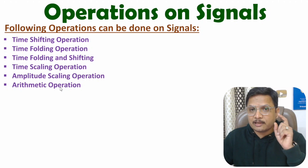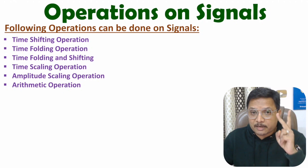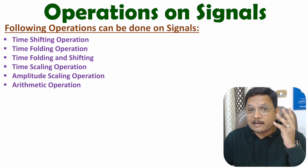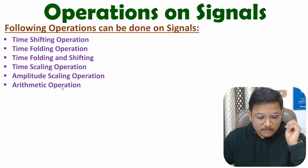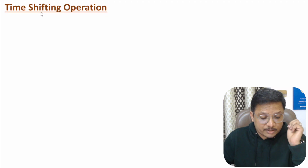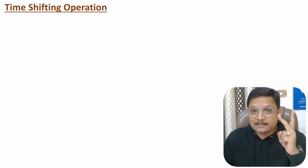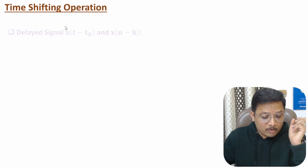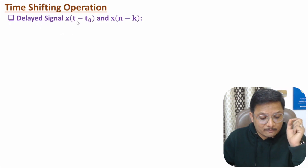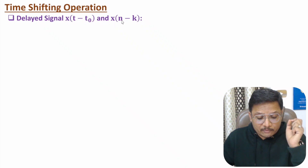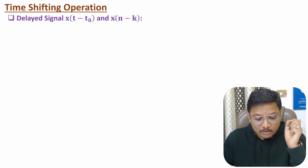In arithmetic operation, I will explain addition, subtraction, multiplication, and division of signals. First, I will explain time shifting operation. In time shifting, we have two categories: delayed signal and advanced signal. For a delayed signal in the time domain, if you want to delay a signal by t-naught, it will be x(t - t₀). In the discrete domain, if you delay by k elements, that will be x(n - k).